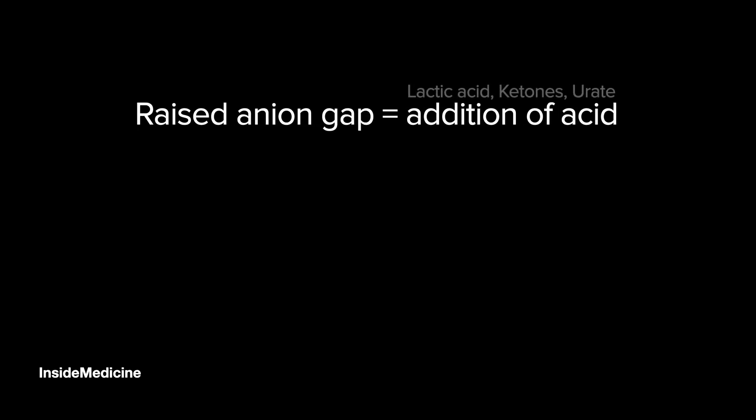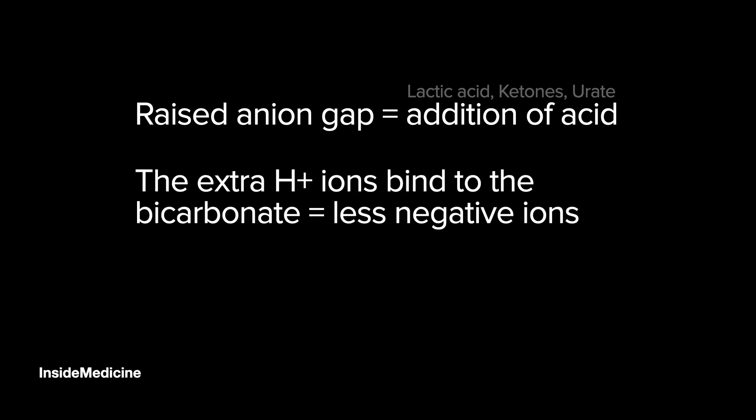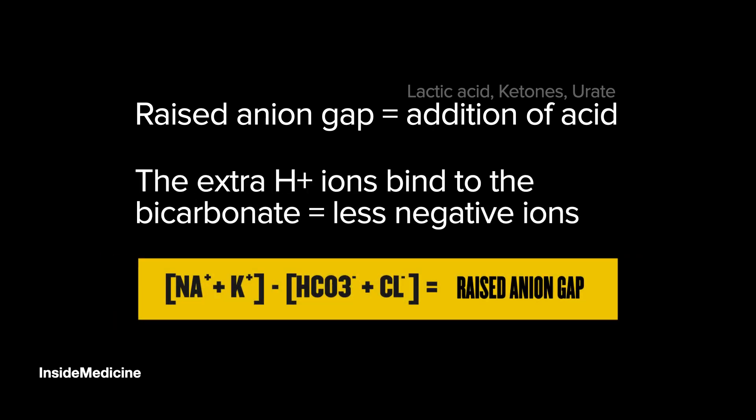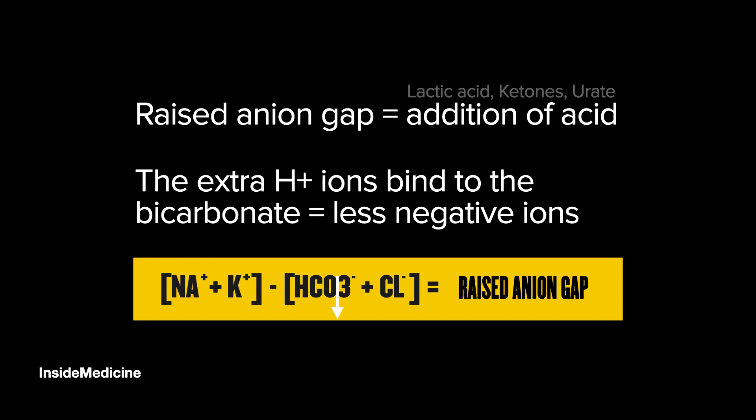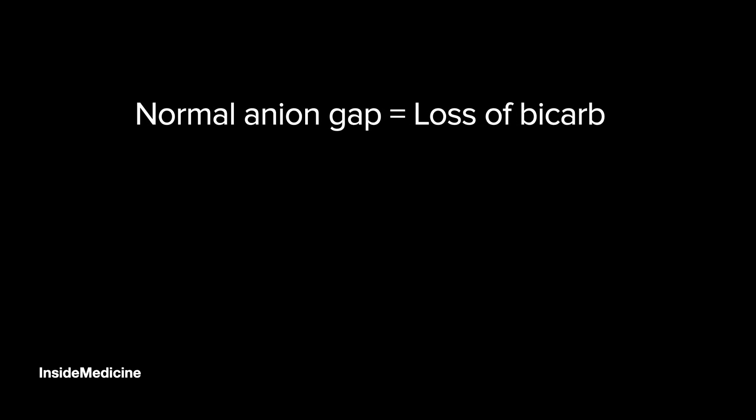In a raised anion gap, there is the addition of an acid — for example, lactic acid in shock or heart failure, ketones from DKA, or urate in renal failure. These extra H+ ions bind to bicarbonate, meaning there are fewer negative ions, so the anion gap increases.